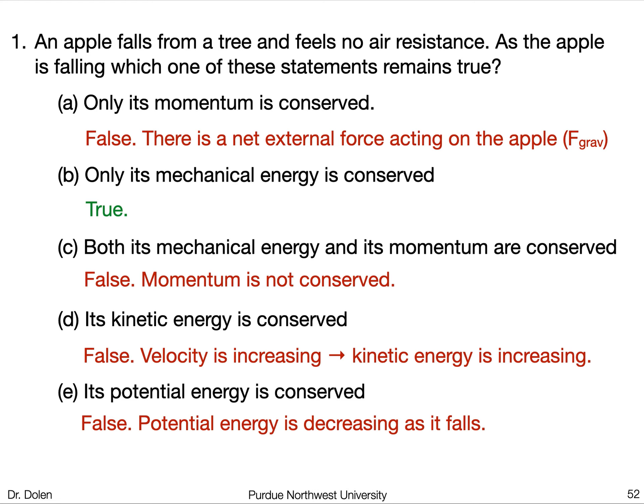The answer is B — only mechanical energy is conserved — is the only true statement. When an apple falls from a tree, its momentum is not conserved because there's a net force acting on the apple — the force of gravity, its weight — so it's going to accelerate, its momentum is going to change, and it will experience an impulse from gravity. If instead you consider the system to be the apple plus the Earth, then the momentum of that giant system would be conserved — the Earth moves slightly toward the apple while the apple moves toward the Earth — but the momentum of the apple alone is not conserved.